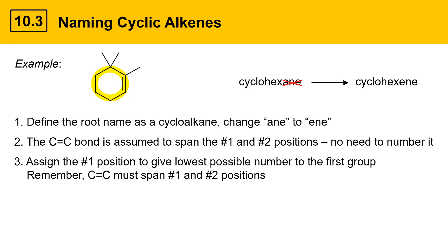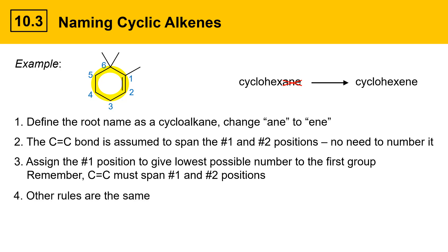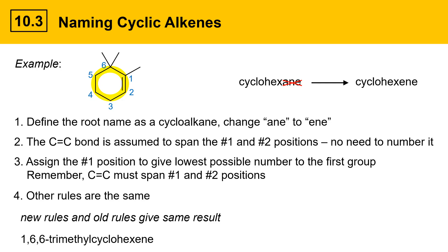We do need to assign which carbon gets the number one and number two positions. The alkene has two potential spots — we could give the number one position to either carbon of the double bond, with the other carbon becoming number two. The rules say you should assign the number one position to give the lowest possible number to the first substituent group other than the double bond. The C=C double bond must span the number one and number two positions. In this case, the top carbon of the alkene gets number one and the bottom carbon gets number two, and all other ring numbers follow suit. Following all other alkane naming rules, the molecule's name under both new and old rules is 1,6,6-trimethylcyclohexene.